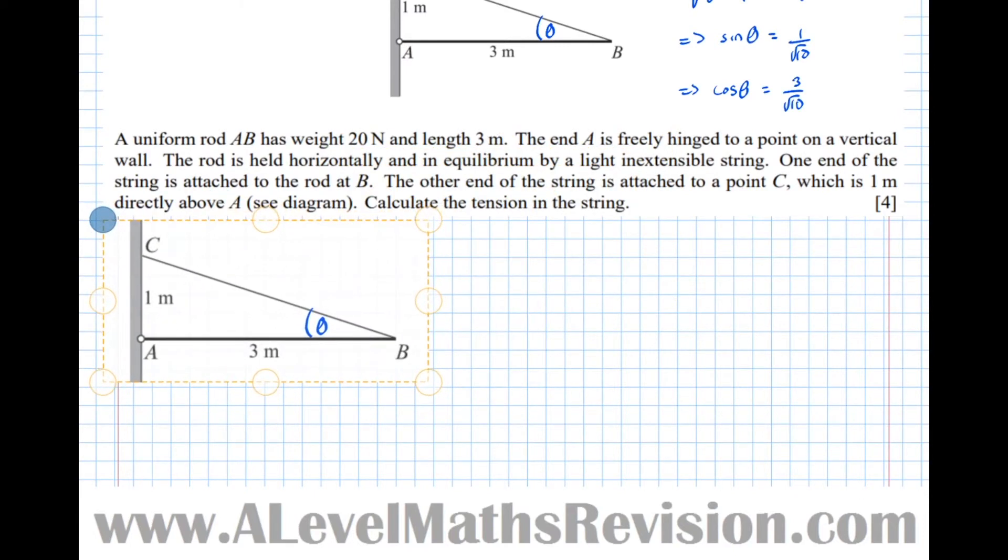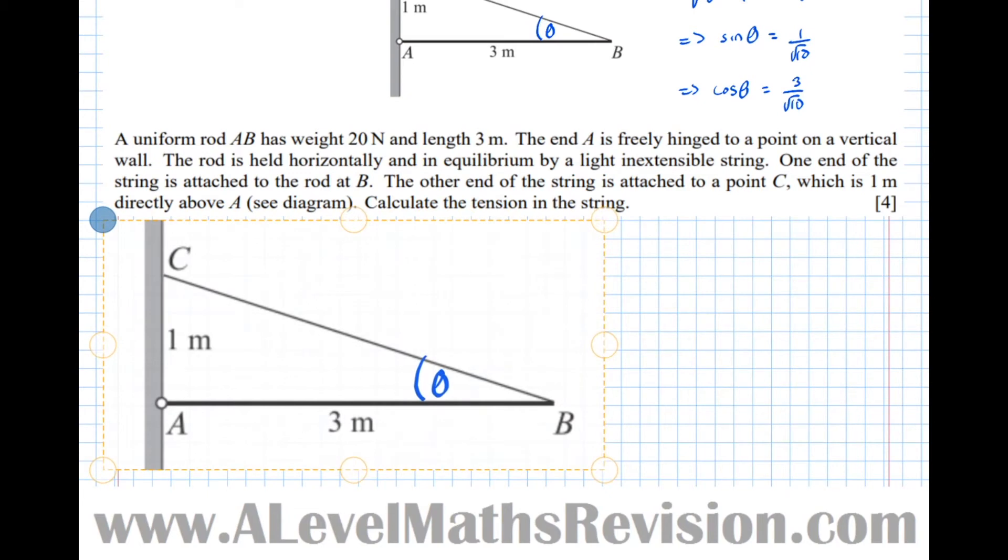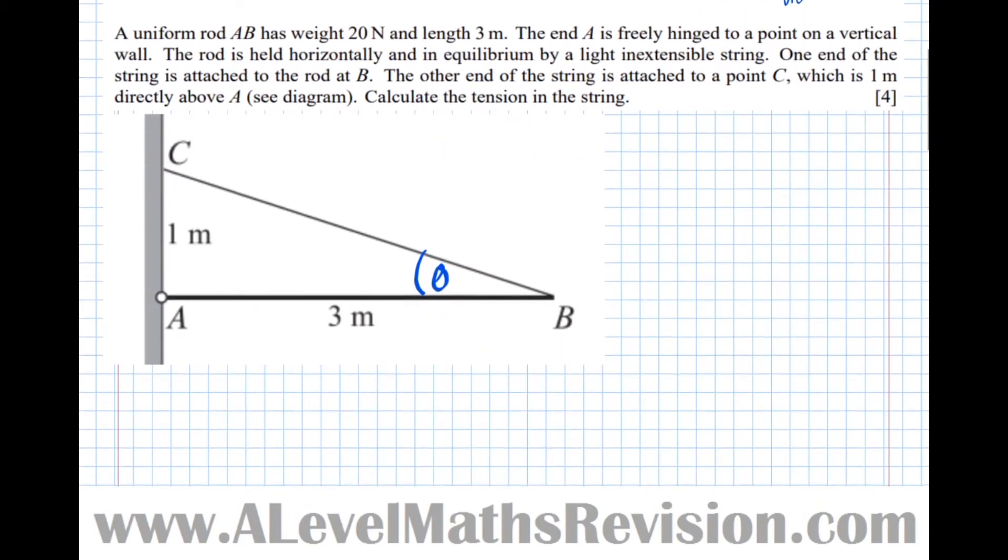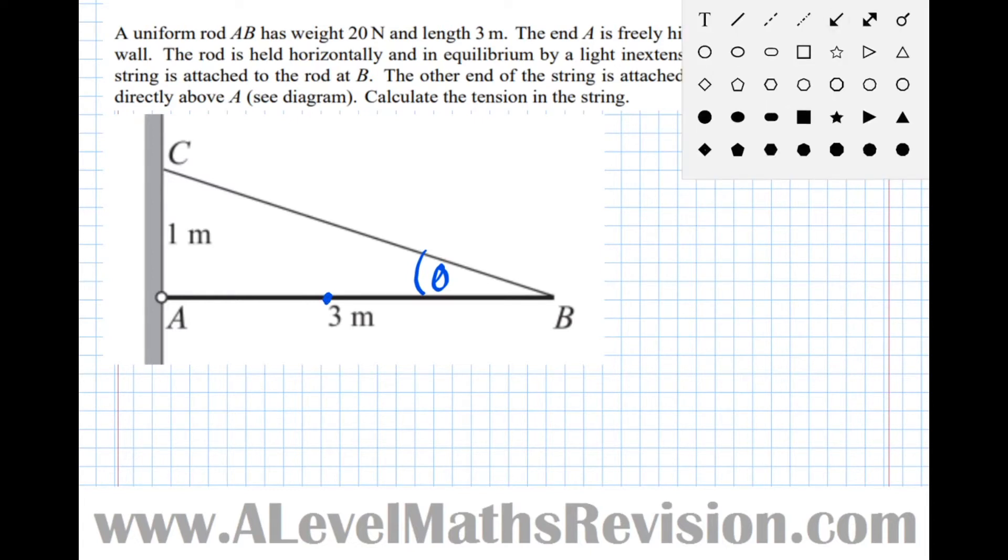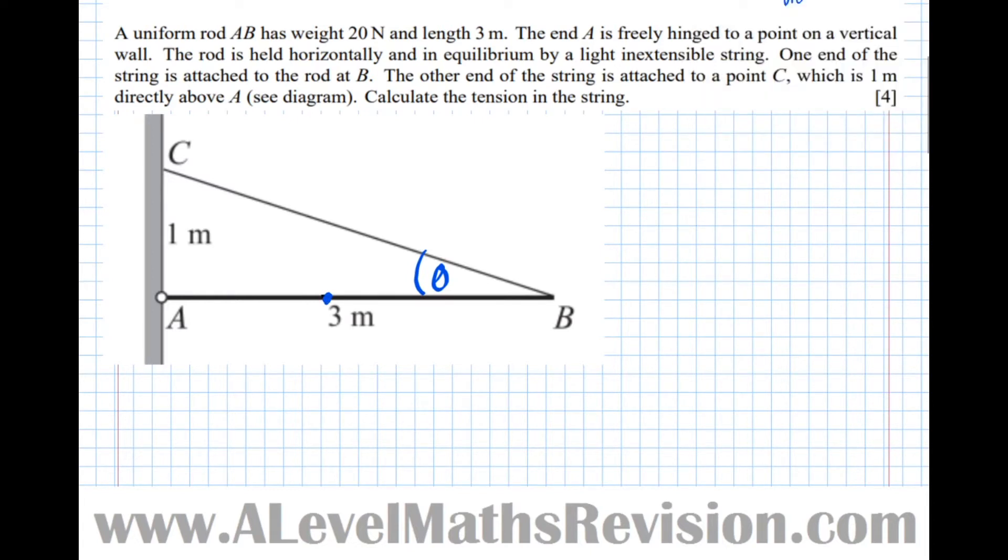So it's always good to draw a diagram. I'm just going to take a copy here and draw big enough to draw all the forces on. So we know the rod is uniform and has weight 20 newtons. Well, uniform means the centre of mass is at the middle of the rod.